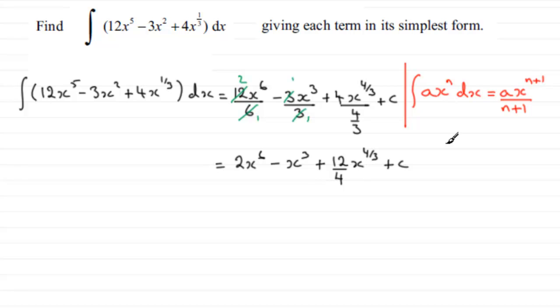Since 4 goes into 12 three times, our final answer is 2x to the power of 6 minus x cubed plus 3x to the power of four-thirds plus c. And that's it.